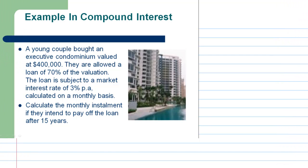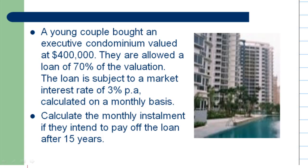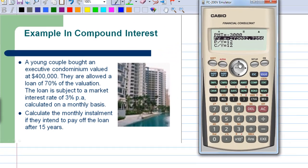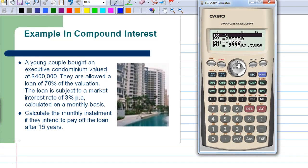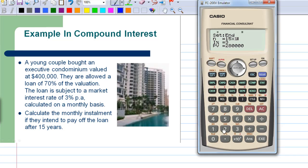Let's look at another variation. Suppose the couple want to pay off the loan after 15 years — you want to find out what the monthly installment amount would be. So I have the calculator ready. N, the number of periods, is 15 years: 15 times 12 equals 180 months. The interest rate remains the same.